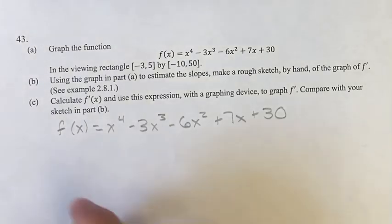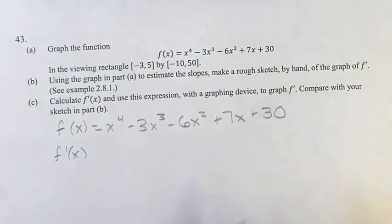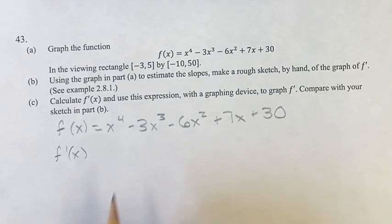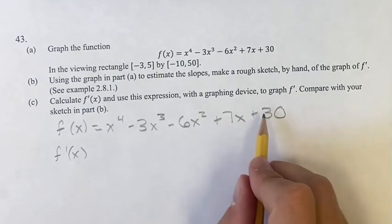So finding the derivative of this, first of all the derivative of a constant is just zero, so we're going to find the derivative of all these terms, add them all up, and then we're just gonna have a plus zero on the end which we don't really need to worry about, so we can just ignore this.